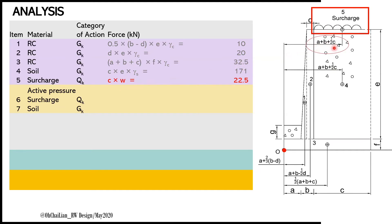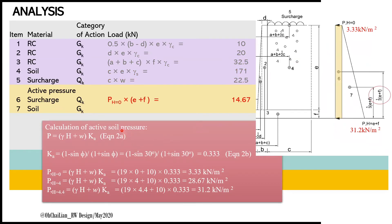Rankine active earth pressure is used in calculating the lateral pressure. Lateral pressure can be determined using Equation 2 for different heights, where gamma is the density of soil, h is the height of interest, w is the surcharge, and Ka is the Rankine active pressure coefficient. Rankine active earth pressure requires information on the internal friction angle. Once the lateral pressure is determined, the pressure diagram can be drawn. The force from item 6 can be calculated from the active pressure as the area of the shown rectangle, and the level arm is calculated from the equation half of the total e plus f.